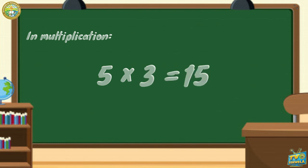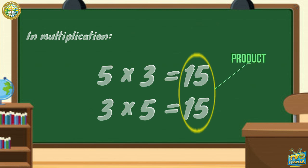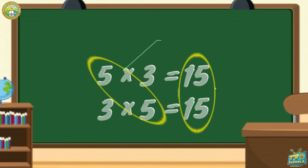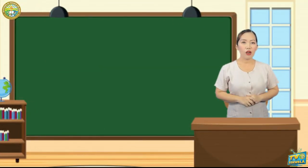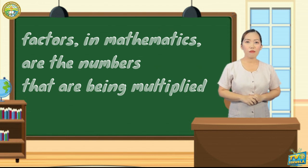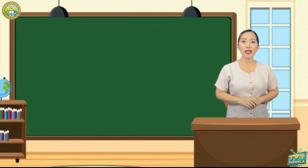Or three times five equals fifteen, where fifteen is the product, and three and five are the factors. But what are these so-called factors? Factors in mathematics are the numbers that are being multiplied. Let us learn about this further by studying some figures.